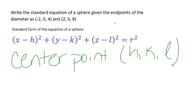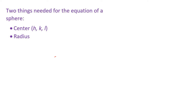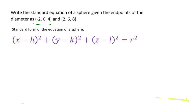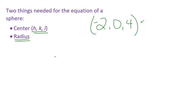So let's talk about what they've given us. They have given us the two endpoints of the diameter, and from that we can find the radius and the center point. We can find the radius by taking the distance of the diameter divided by two. We've got negative two, zero, four as one endpoint of our diameter, and the other one is two, six, eight.